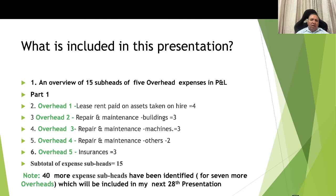What I have included in this presentation: first, an overview of the 15 subheads of 5 overhead expenses in the P&L account. Overhead number 1 is lease rent paid on assets taken on hire — 4 subheads. Overhead number 2 is repair and maintenance of buildings — 3 subheads. Overhead number 3 is repairs and maintenance of machines — 3 subheads. Overhead number 4 is repair and maintenance others — 2 subheads. Overhead number 5 is insurance — 3 subheads, giving a subtotal of 15 expense subheads. There are 40 more expense subheads identified for 7 more overheads, which will be included in my next presentation.